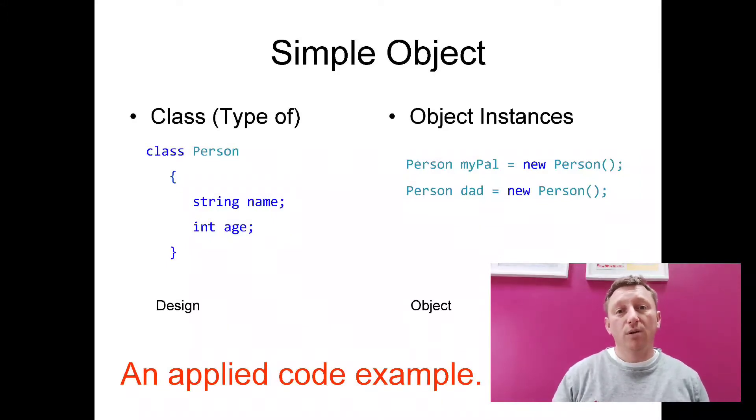Okay, some code. What is it that we've got here? Well, on the left-hand side, you have the design, the class, and on the right-hand side, you have how you would build the object. So starting with the design. The design, we've decided to call person, class person.